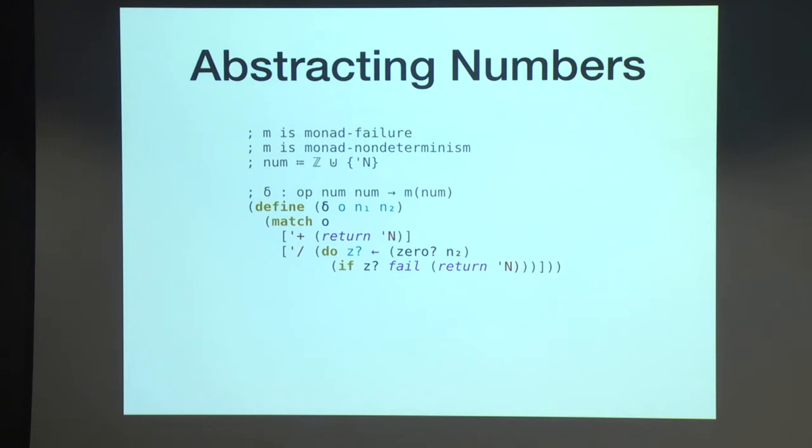So delta, our interpretation of operations over numbers, now needs to handle the case when a number could be an abstract number tick n. So for plus, we're going to be conservative and just say, the addition of two numbers, no matter what they are, we're going to be conservative and say that's a number. But for division, in order to be sound and correct, we need to check for zero. Because the interpreter needs to be able to fail. Imagine this was a program analysis, and you want to detect division by zero errors. This needs to return the possibility of failure in that case.